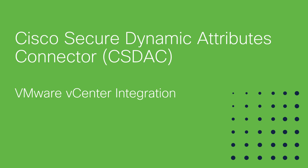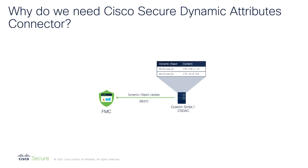Before we jump into the demo, let me give you a brief overview of the CS DAC. In Firepower 7.0 release, we introduced Dynamic Objects. This is a new type of attribute allowing you to add and remove IP addresses from the objects in real time without the need to deploy the policy. The Dynamic Objects are configured with REST API calls to the FMC. So in order to keep your Dynamic Objects up to date, you need an external script or an application to keep track of IP addresses in the network and then propagate the changes to the FMC.